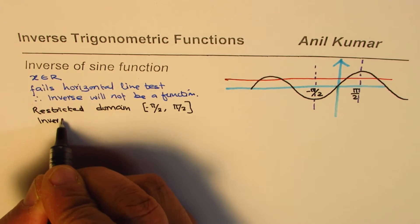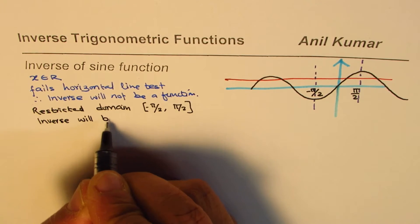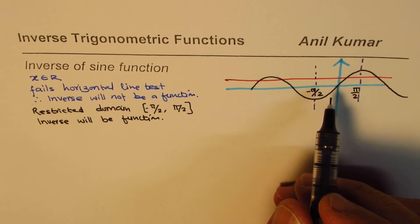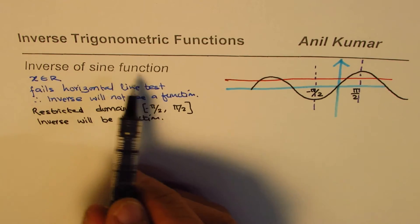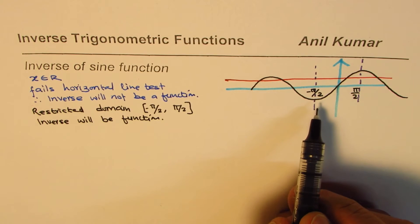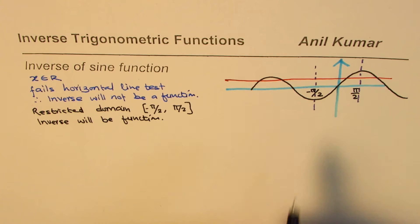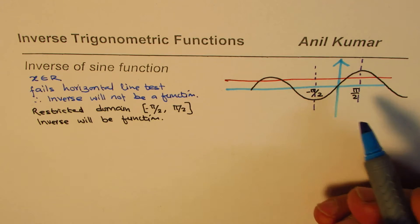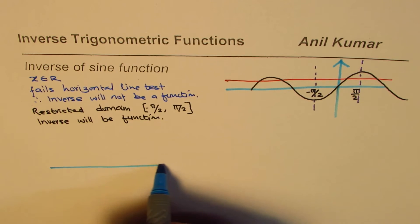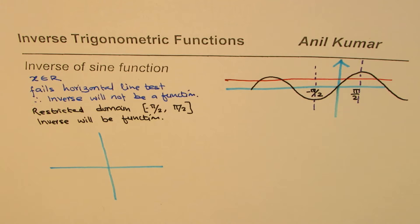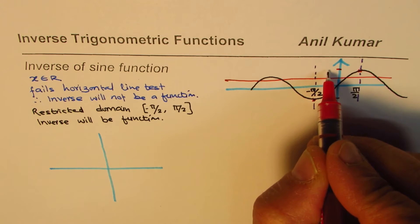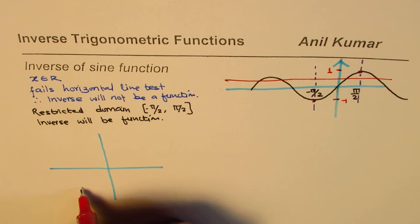So we choose the domain from minus pi by 2 to plus pi by 2. In this restricted domain, which is from minus pi by 2 to plus pi by 2, it passes the horizontal line test, and therefore the inverse will be a function. This is very important to understand. From now onwards whenever we talk about the inverse of a sine function, we will restrict its domain to minus pi by 2 to pi by 2. The minimum value of the function is minus 1 and the maximum is plus 1.